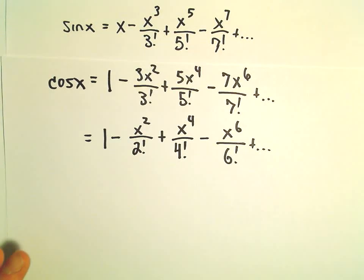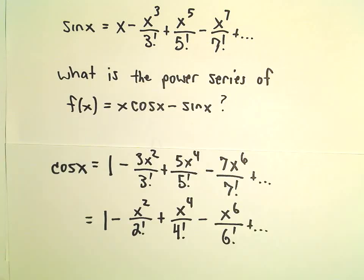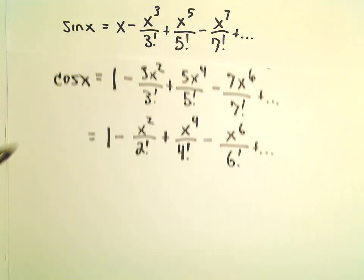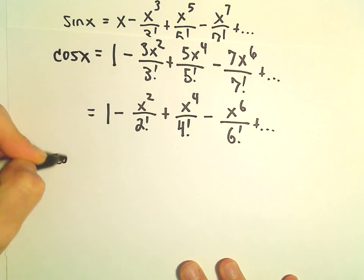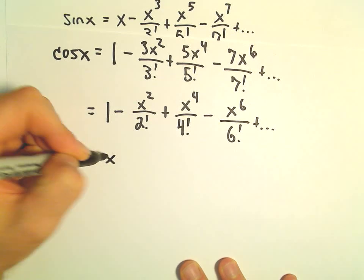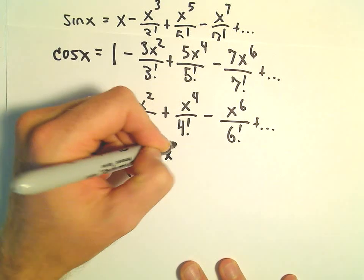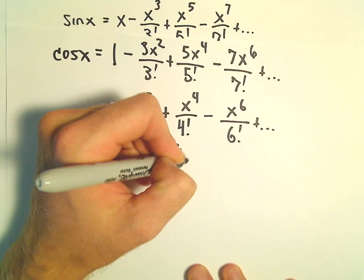So we've now got a series representation for cosine x. To find x times cosine x, we'll just multiply both sides by x, so we'll need to distribute.